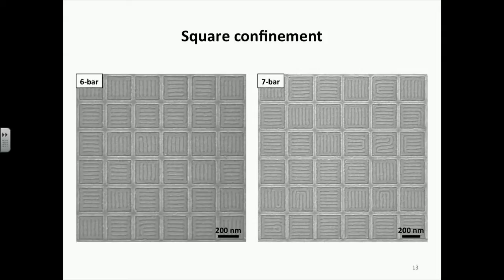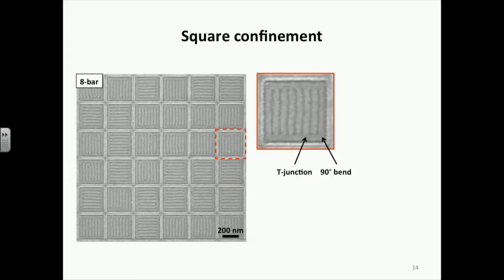As we increased the confinement size even more, we observed six-bar structures shown in the left SEM image and seven-bar structures shown in the right SEM image. Even for six- and seven-bar structures, we still observed very good long-range order and alignment. Finally, for a confinement size of about 300 nanometers, we observed eight-bar structures. In the magnified SEM image, we can clearly see the T-junctions formed in the middle and the 90-degree bends formed at each of the four corners.